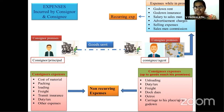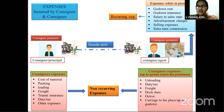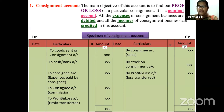When we calculate valuation of unsold stock, only non-recurring expenses of consigner and non-recurring expenses of consignee will be taken. We don't consider recurring expenses. That is the reason you need to know the difference between recurring and non-recurring expenses. Now, consignment account is a nominal account. Its main objective is to prepare profit and loss on a particular consignment. All expenses are debited and all incomes are credited in this account.